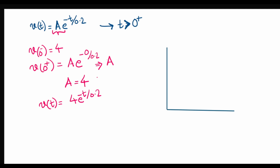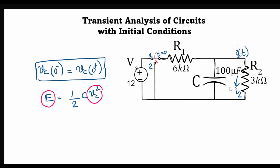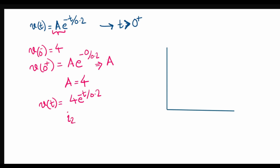Since we are interested in the current through resistor R2, I2 = V(t)/R2 = (4/3k)·e^(−t/0.2) milliamps. Let's go ahead and plot this current as a function of time.